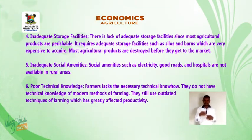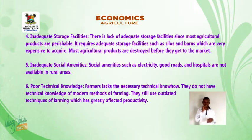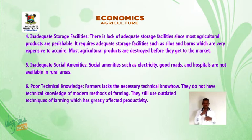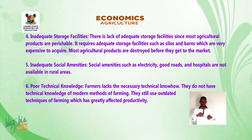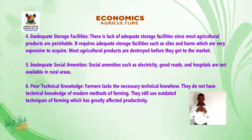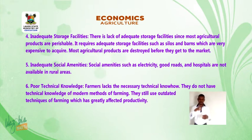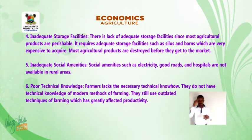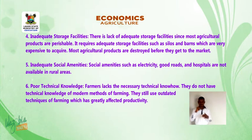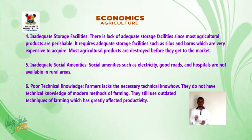4. Inadequate storage facilities: There is a lack of adequate storage facilities, since most agricultural products are perishable. It requires adequate storage facilities such as silos and barns, which are very expensive to acquire. Most agricultural products are destroyed before they get to the market. 5. Inadequate social amenities: Social amenities such as electricity, good roads, and hospitals are not available in rural areas. 6. Poor technical knowledge: Farmers lack the necessary technical know-how. They do not have technical knowledge of modern methods of farming and still use outdated techniques, which has greatly affected productivity.